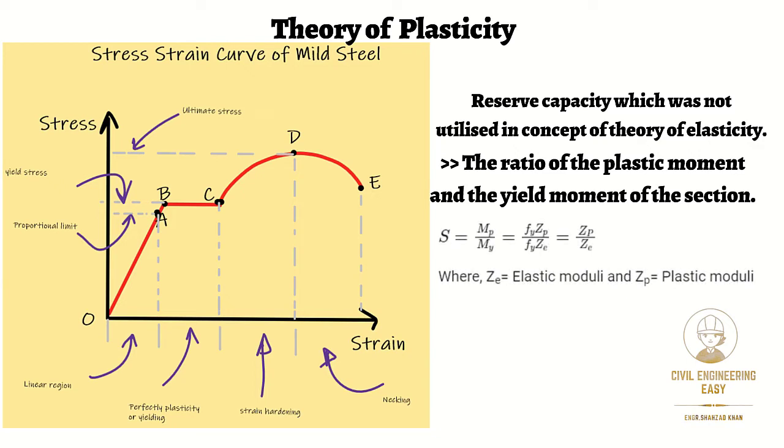As we know that the plastic moment is equal to Fy times Zp, divided by the yield moment which is equal to Fy times Ze. Fy will be cancelled with Fy, so we will get Zp divided by Ze, where Ze is elastic modulus and Zp is the plastic modulus.